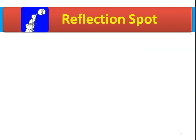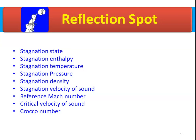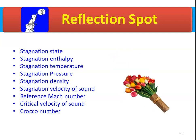Now we take a reflection spot. We have had a discussion for the past 15 minutes. From the discussion, try to write down and recall some of the terminologies related to stagnation properties and stagnation state: stagnation state, stagnation enthalpy, stagnation temperature, stagnation pressure, stagnation density, stagnation velocity of sound, reference Mach number, critical velocity of sound, and Crocco number. Once you write this, the equations will be reinforced in your mind, which will be useful for your future learning.